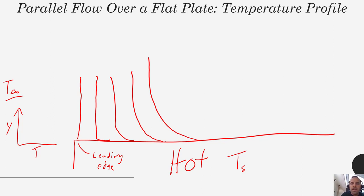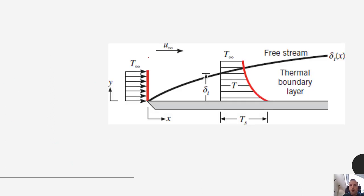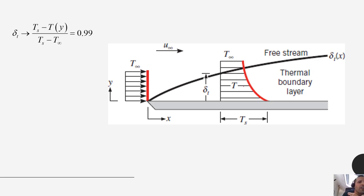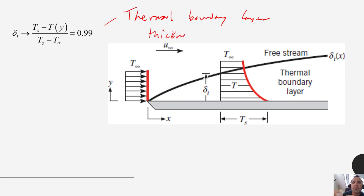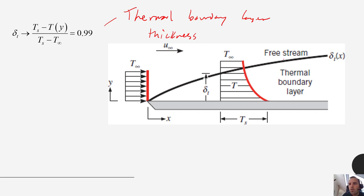So we also get something called a thermal boundary layer that forms. If we look at y in the y-direction and temperature in the x-direction, we see a temperature profile forming. We define another variable: delta_t, the thermal boundary layer thickness. Similar to the velocity boundary layer thickness, it is a measure of how high up you have to go to reach 99% of your bulk fluid temperature. This thermal boundary layer starts to grow and the temperature profile gets more and more pronounced the further down the length of that flat plate you get.